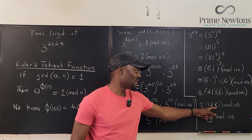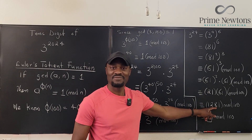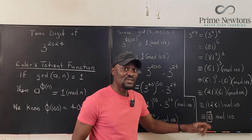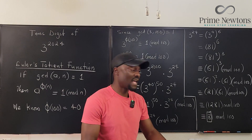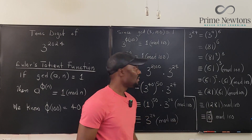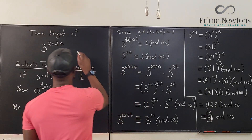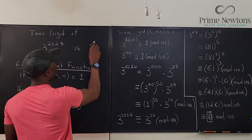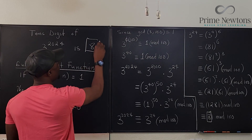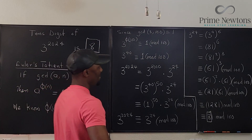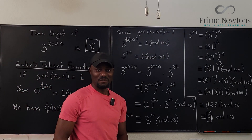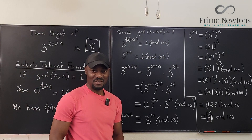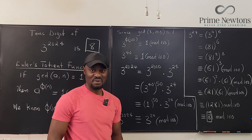We found the tens digit, which is 8. The last two digits are 81, so the answer to the original question is 8. Never stop learning, those who stop learning stop living. Bye!